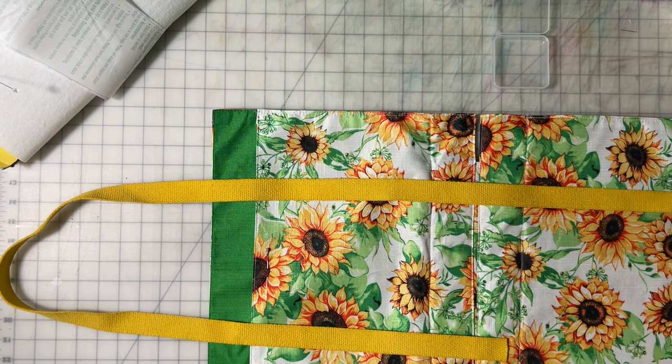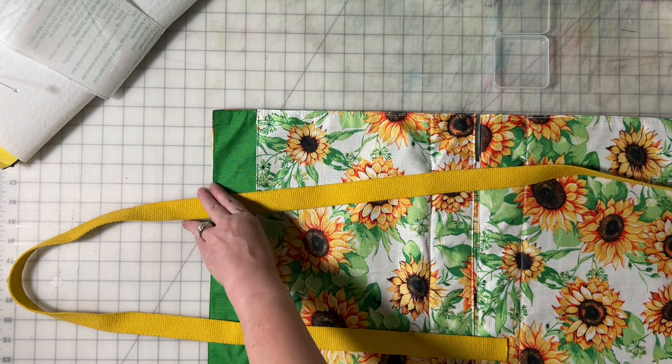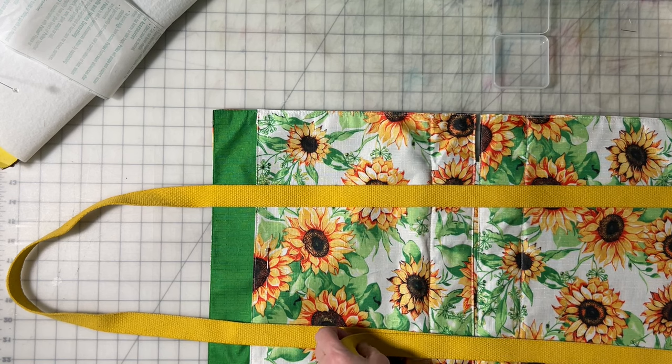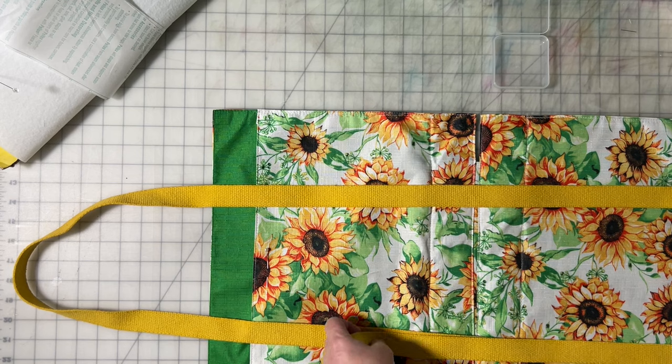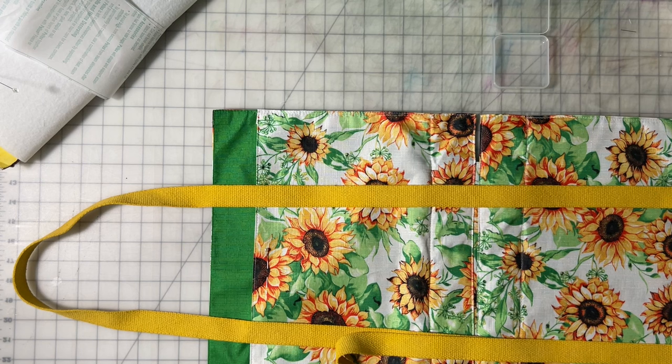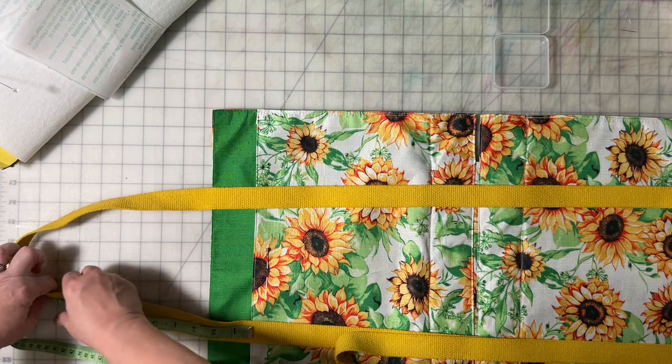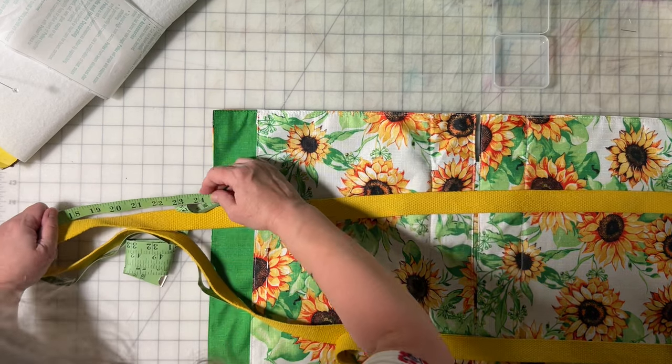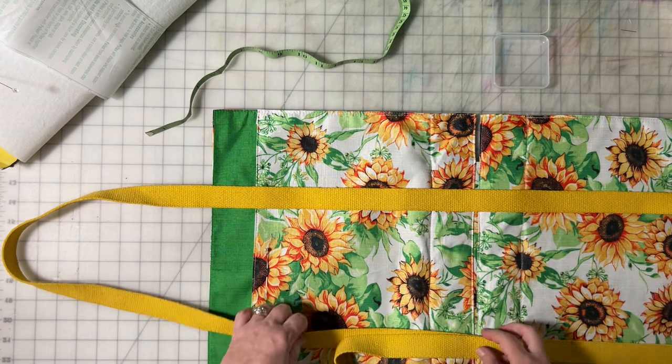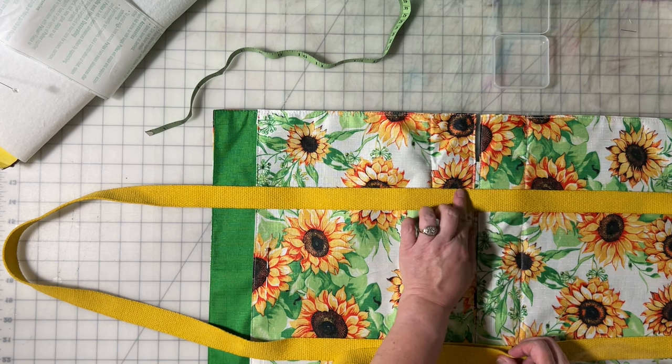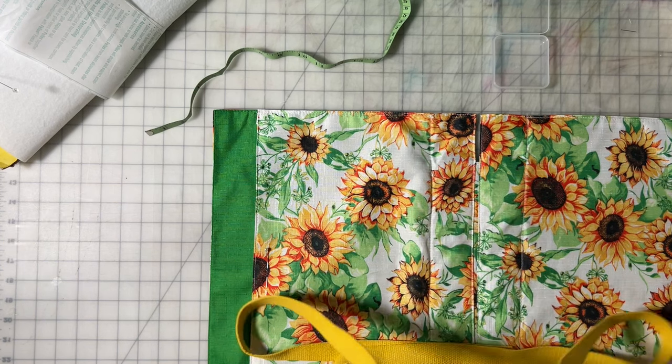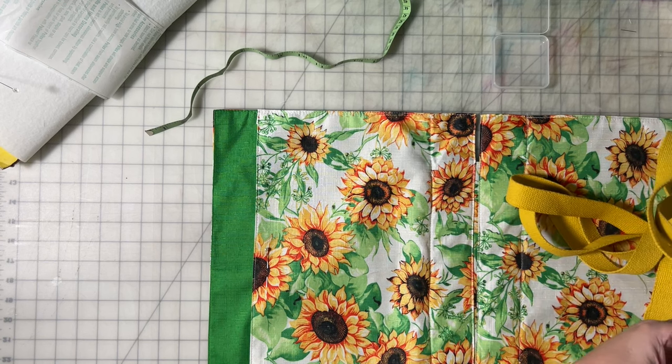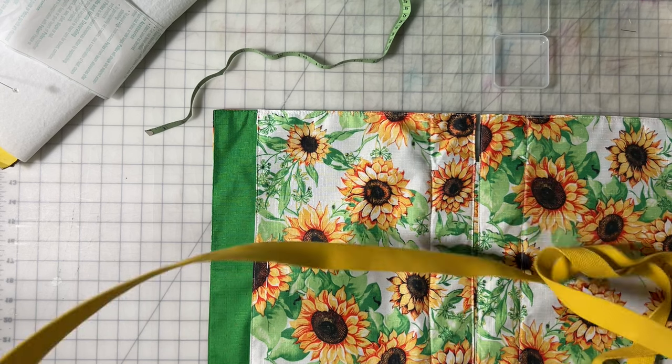Now this is a cotton webbing I got from Amazon. I use this kind of stuff for all of my bag handles. This is a tote bag so I'm going to make the handles a little longer than normal - about 24 and a half, 25.